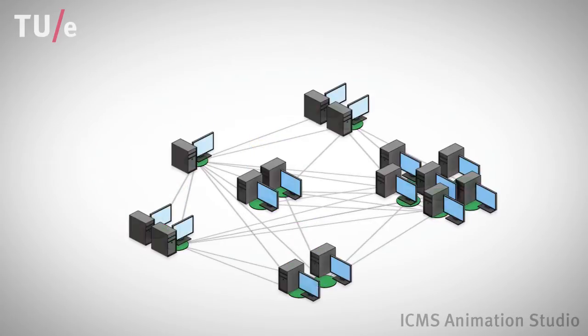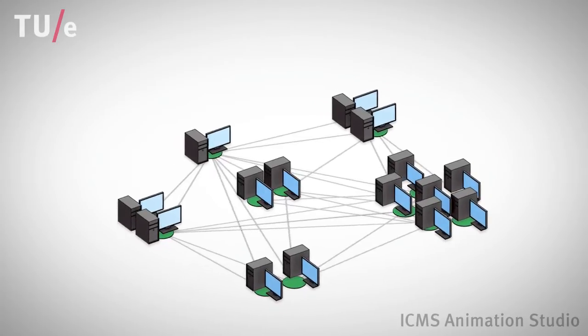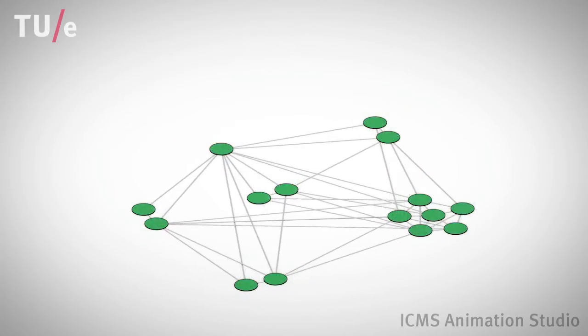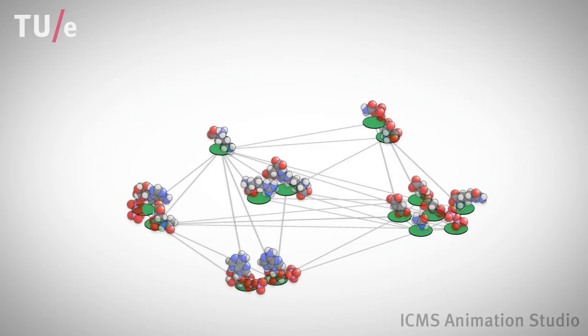This network could also indicate the physical cables between internet routers or the intricate relations between metabolites in a cell.